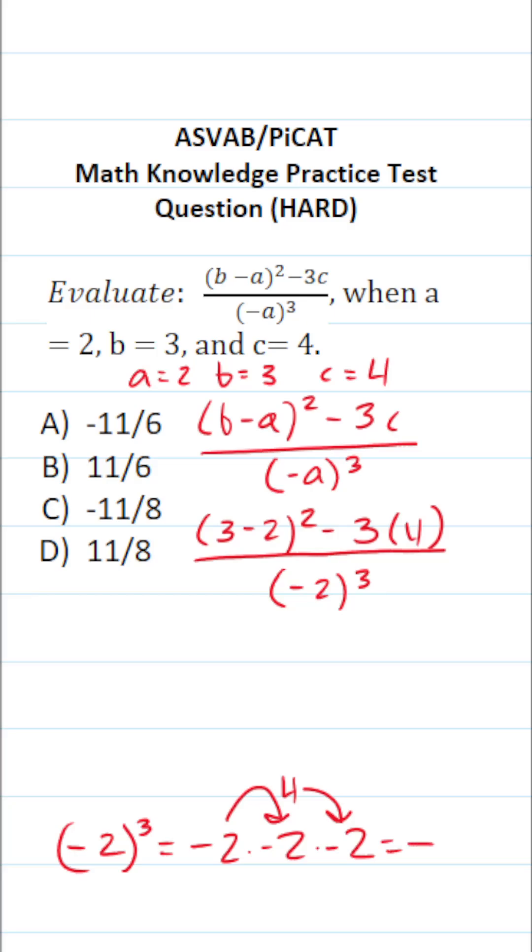So negative 2 times negative 2 is positive 4. Positive 4 times negative 2. A positive times a negative is going to be a negative. More specifically, positive 4 times negative 2 is negative 8. So in our denominator, we have negative 8.